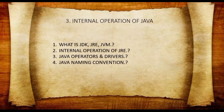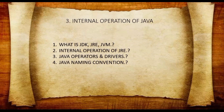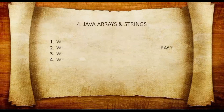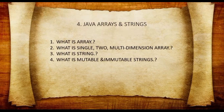Next comes Java operators and drivers. When you install a Java compiler, you need to add some particular drivers in order to work on certain software projects. After that comes Java naming convention — it depends on keywords, the name of the method, the name of the class, whether the first letter should be capital or small, and how you code the program.